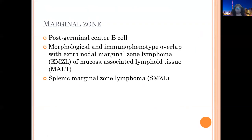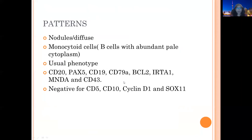Another category is marginal zone lymphoma — a post-germinal center B-cell lymphoma. These cells are a little bit bigger than mature lymphocytes with abundant cytoplasm and more monocytoid appearance. When involving the mucosa, it is mucosa-associated lymphoid tissue lymphoma — MALT. When involving the splenic zone, it is splenic marginal zone lymphoma. In the lymph node, they can have nodular or diffuse pattern with monocytoid cells showing usual pan B-cell phenotype. These are negative for CD5, CD10, cyclin D1, and SOX11.